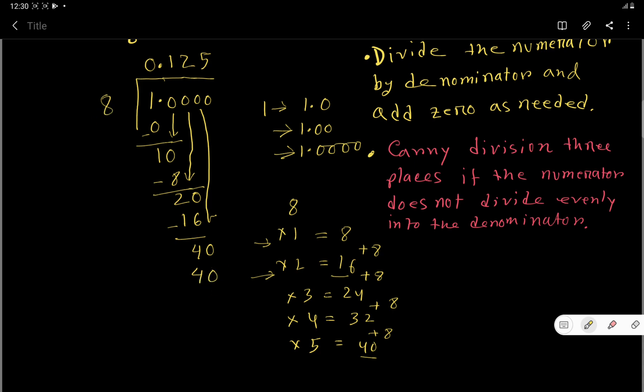So 5 times 8 is 40. If you subtract, you are getting 0. Look, this 0 is not needed here, so you can delete this 0. Already we are getting remainder 0, so we don't need to add more zeros.